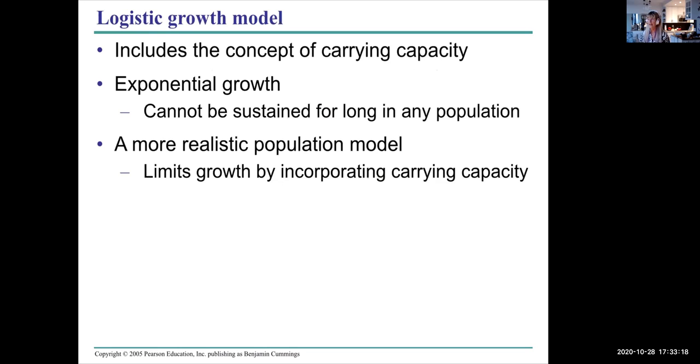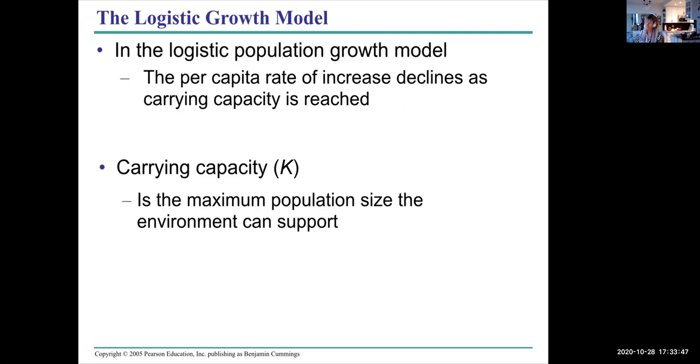Exponential growth has to be curbed at some point because resources are limited. It can't be sustained for long in any population—exponential growth. It either crashes or it levels off steadily. A more realistic model incorporates something known as carrying capacity, the most number of individuals that that particular environment can support. That's called the logistic growth model.